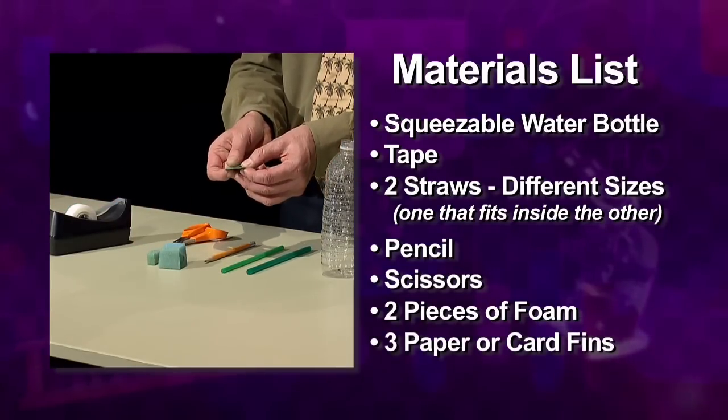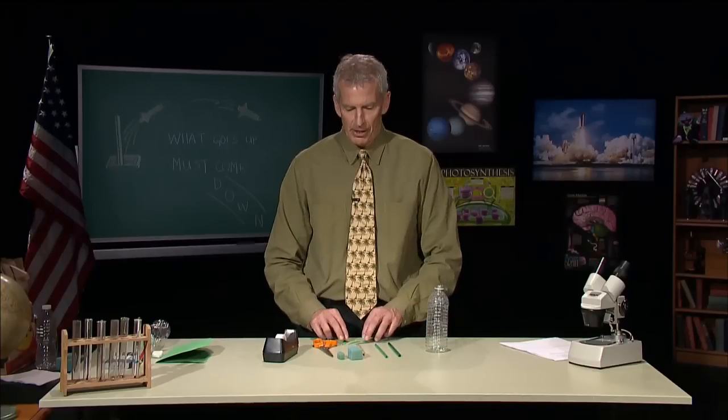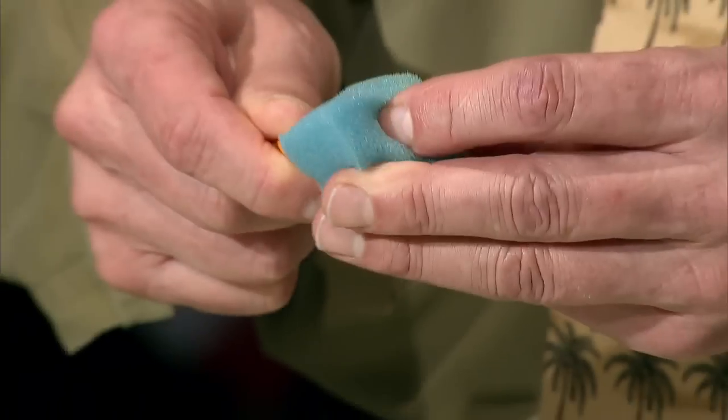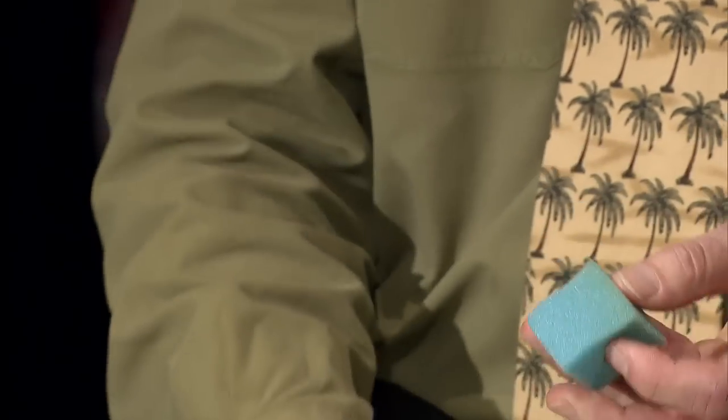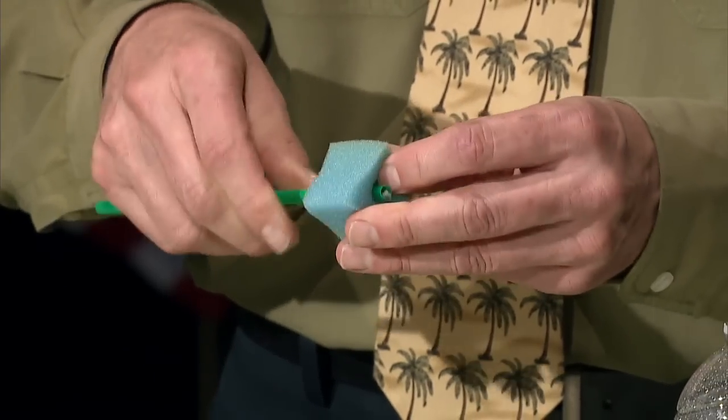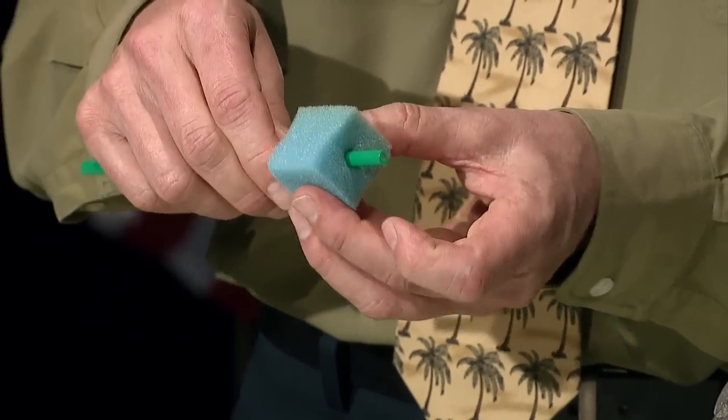The first step is to poke a hole in this piece of foam with your pencil to allow the smaller of the straws to pass through. Once you have the hole poked, then carefully insert the straw through the hole and let it stick out about an inch.